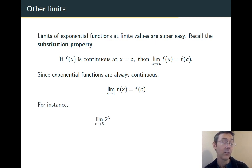For instance, the limit as x goes to 3 of 2^x is 2^3, which is 8. The limit as x goes to 5 of 3^(-x) is 3^(-5), or 1/243. No problem at all.